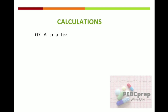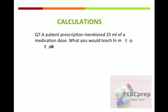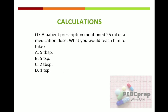Last question: a patient's prescription mentions 25 ml of a medication dose. What would you teach them to take at home? Options: A) 5 tablespoons, B) 5 teaspoons, C) 2 tablespoons, D) 1 teaspoon. If you remember that 1 tablespoon equals 15 ml and 1 teaspoon equals 5 ml, then 5 times 5 ml equals 25 ml, so the answer is B — 5 teaspoons.